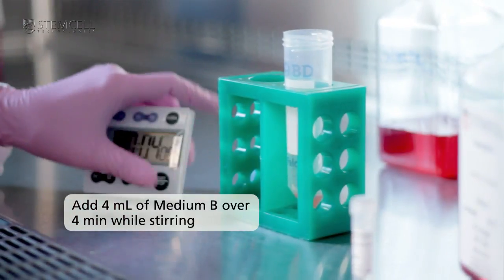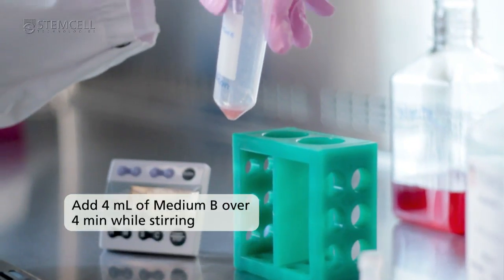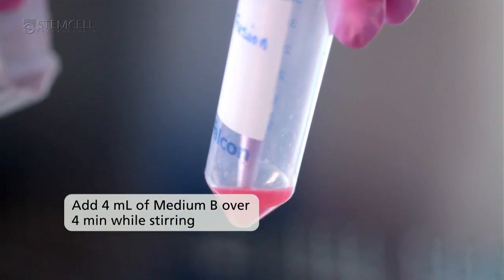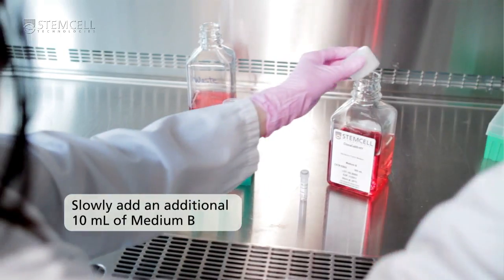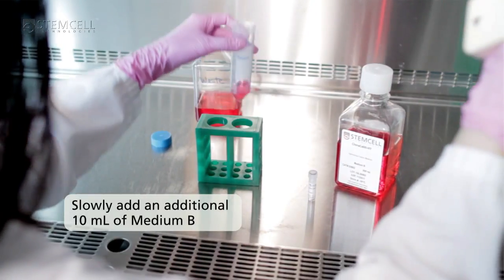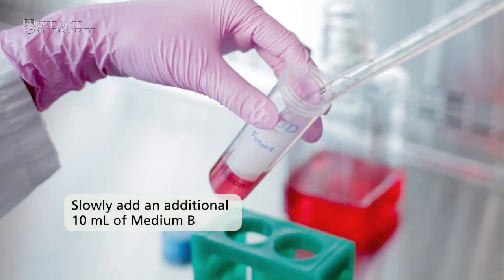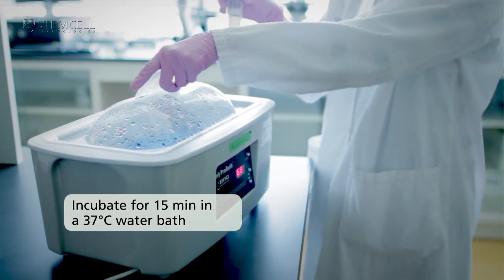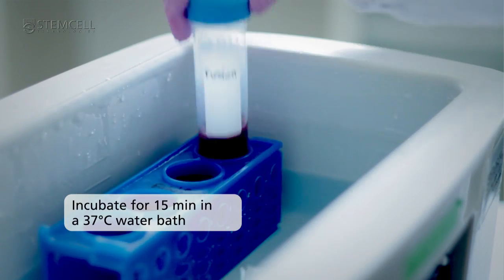Add 4 mils of medium B over 4 minutes while continuously stirring. Slowly add an additional 10 mils of medium B. Incubate for 15 minutes in a 37 degrees Celsius water bath.